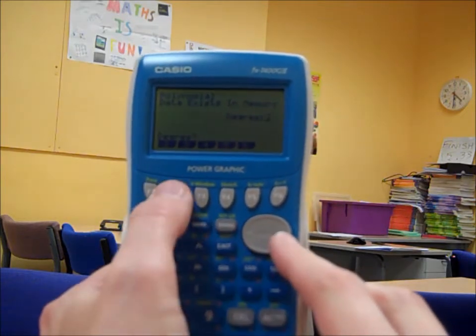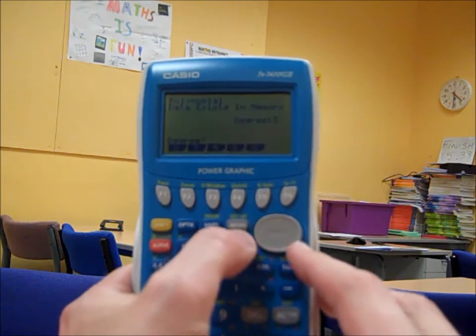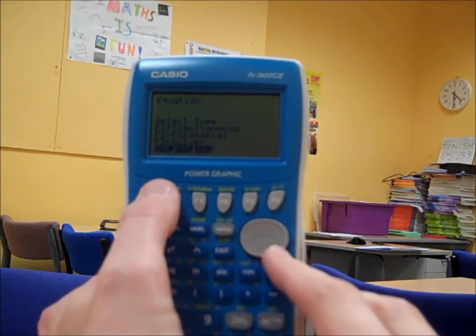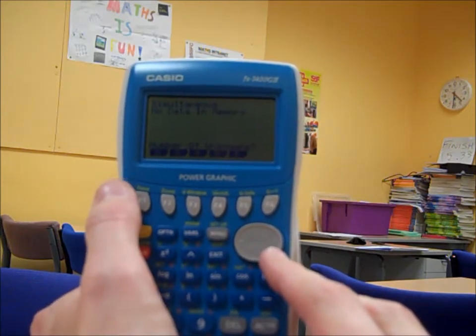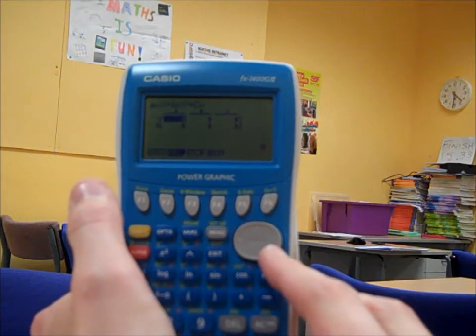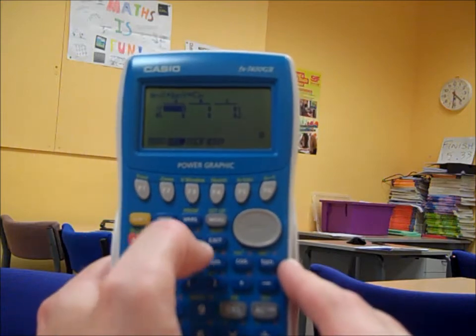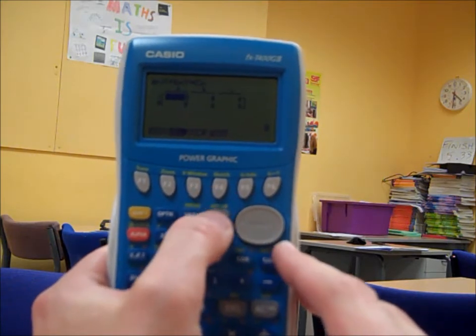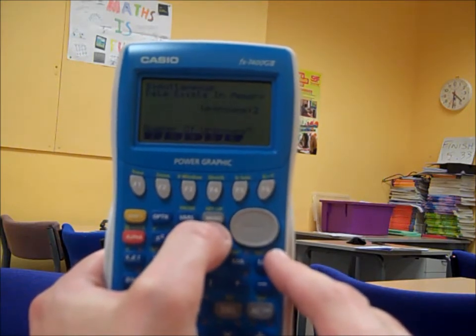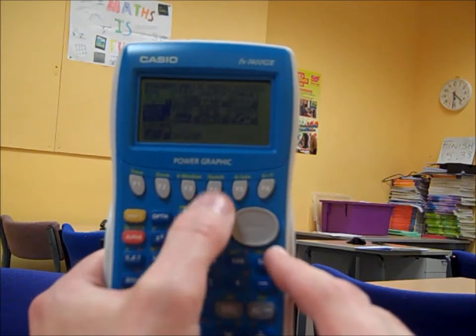We've also got cubics that we can solve in there, or we could do the same thing with some simultaneous equations by entering them in the form ax plus by equals c, sorry, both equations, and it would solve them. So that's all present and correct, the same as the 9750G2.